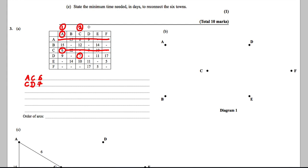D becomes our next column, numbered three. We cross out everything in the D row. Now looking down three columns, the smallest of 15, 12, 10, 11, and 17 is clearly 10. So the next arc we choose is C to E, which is 10.